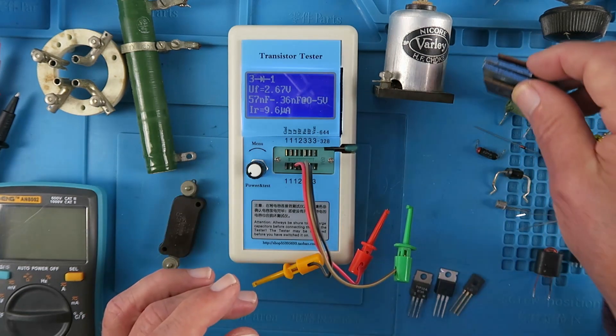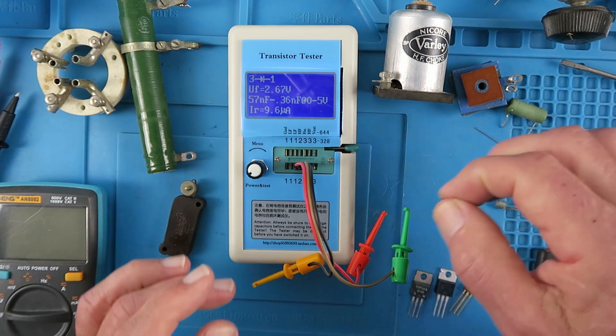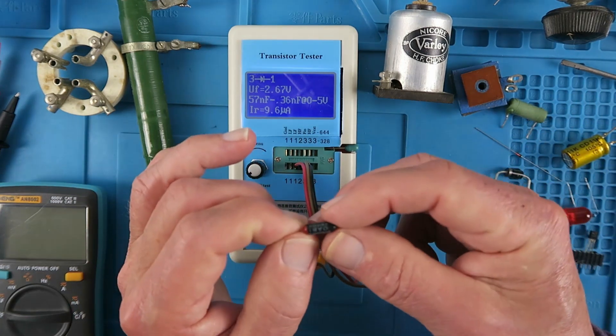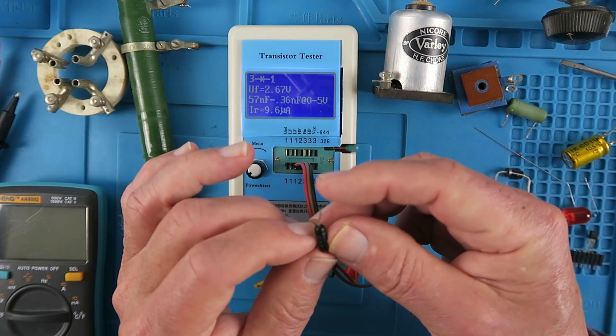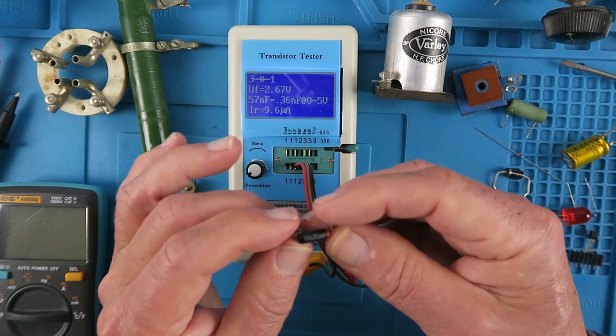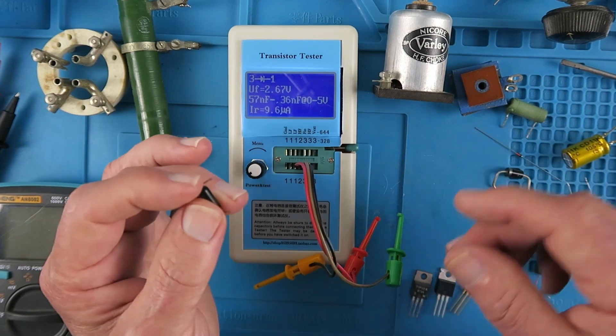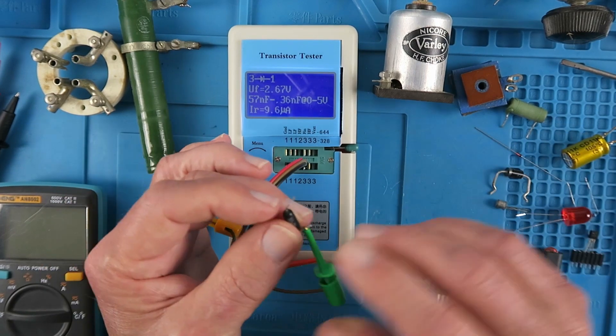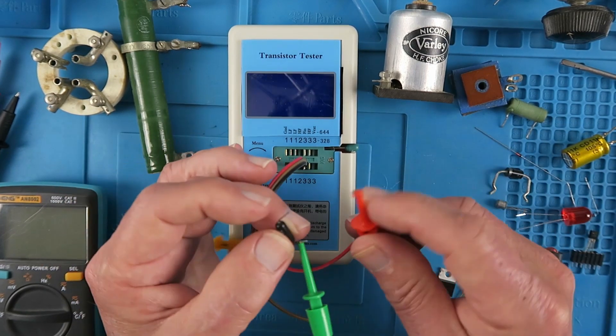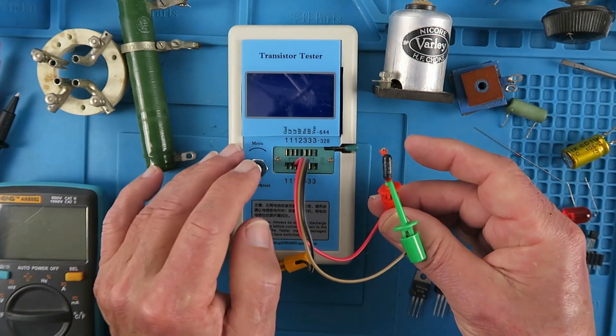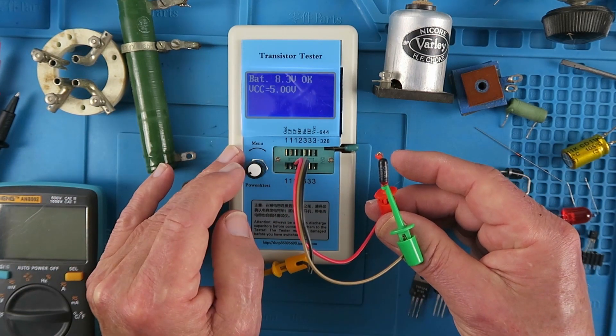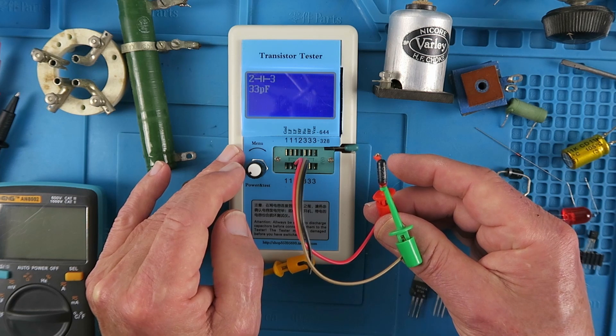After selenium rectifiers came Germanium. This little guy from the Mullard company, sadly no longer with us. It's an OA81 germanium point contact diode. There's a known issue with these. They are very difficult to test because of the residual current inherent in them. And indeed...